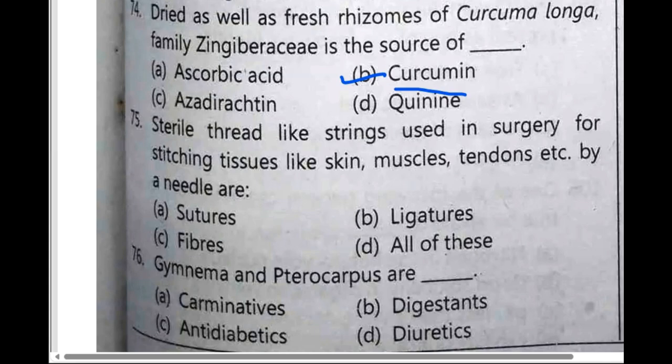Sterile thread-like strands used in surgery for stitching tissues like skin, muscles, tendons, etc. — these are known as sutures.